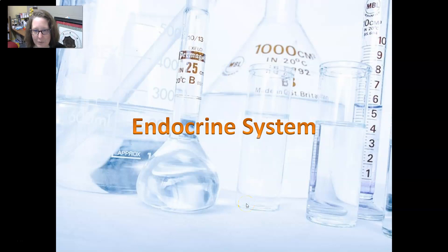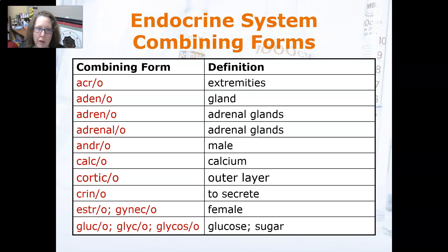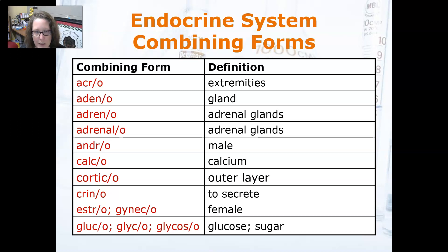Hi, this is Dr. A with your medical terminology video. We're going to look at the word parts of the endocrine system. Let's start with the combining forms: acro means extremities.